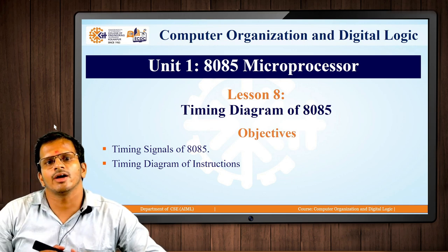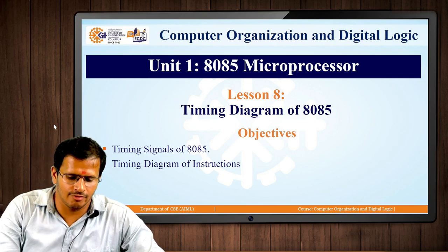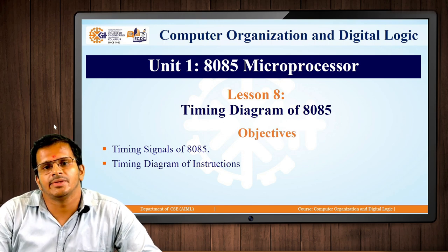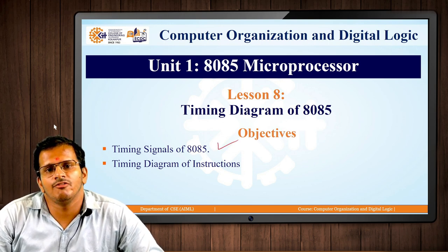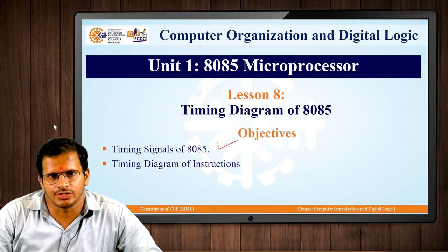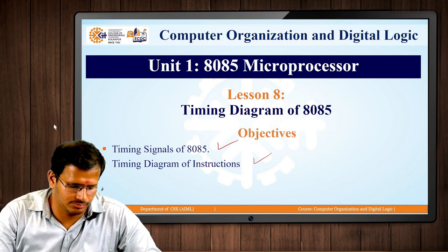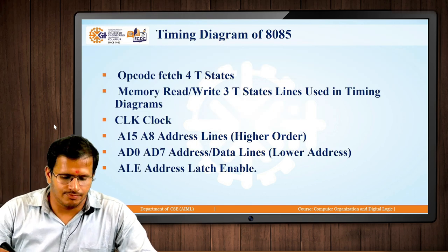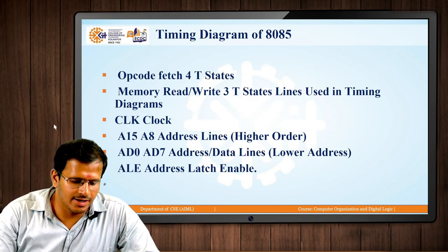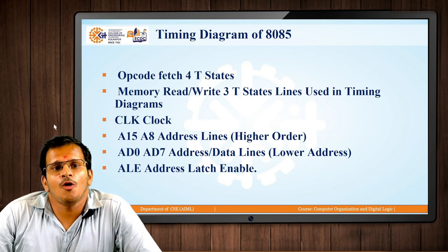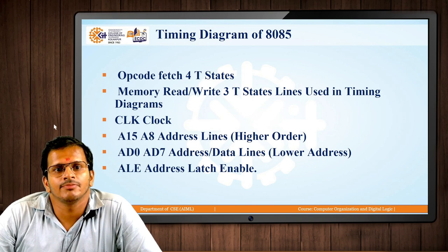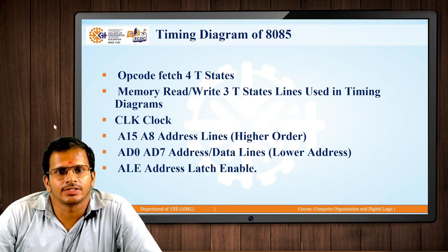Here we will be looking at the timing signals of 8085 and then understanding the timing diagram of some instructions. The basic understanding we need is how many T-states — that is, clock signal states — are required for opcode fetching and for memory read and write operations.